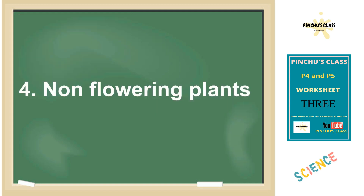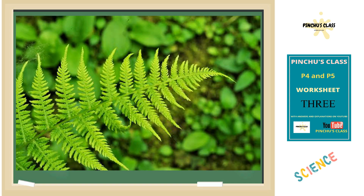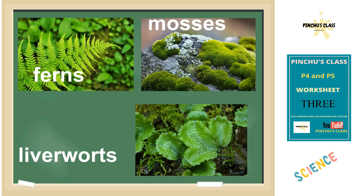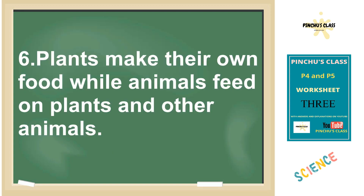Number four: the name given to plants which do not bear flowers is non-flowering plants. Number five, examples of non-flowering plants: we have ferns, mosses, and liverworts — they are all shown in the pictures.